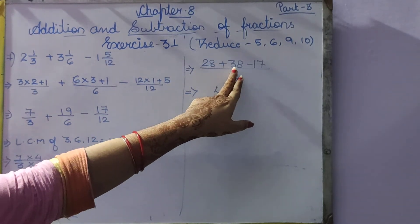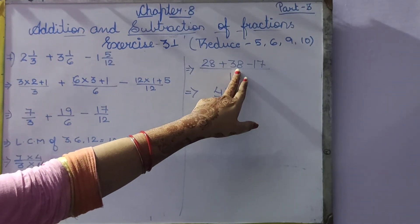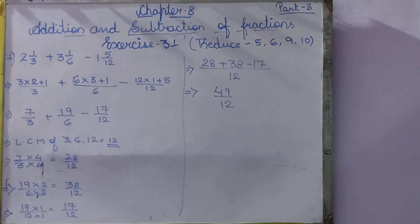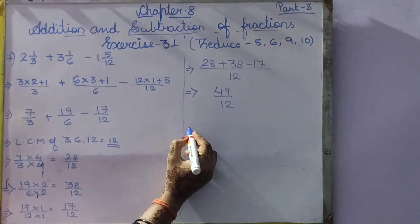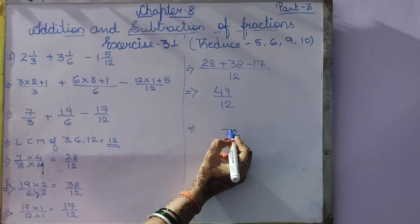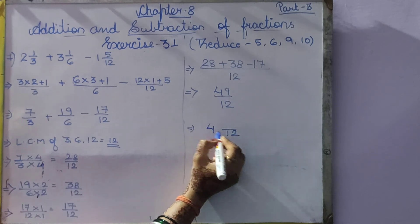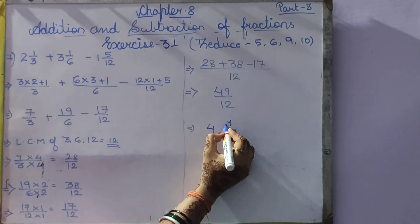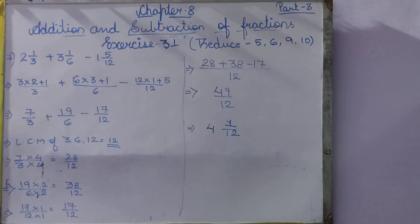Now 28 plus 38 minus 17. When we add these numbers and subtract 17 from that, we get 49 by 12. Now dividing: 12 4's are 48, plus 1 will be 49. So the answer is 4 and 1 by 12.